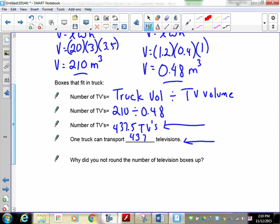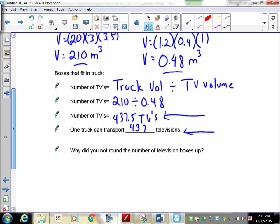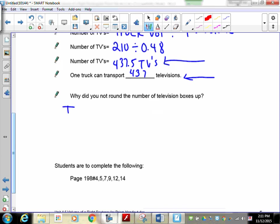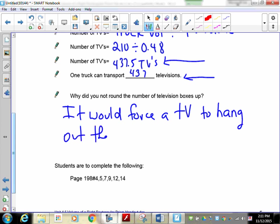I have to tell you there's a flaw with this type of question. We're assuming that the length, width, and height match perfectly for the boxes. It doesn't work that way, but for our calculation, we're just going to work like this. So why do you not round the number of television boxes up? It would force a TV to hang out the back. It wouldn't fit in because there's no room.